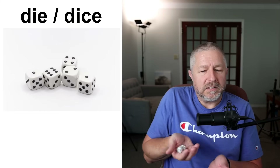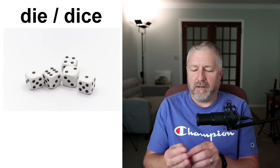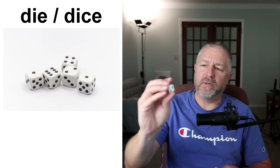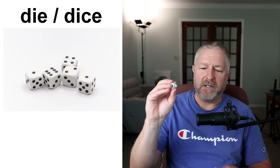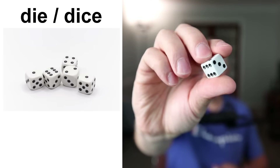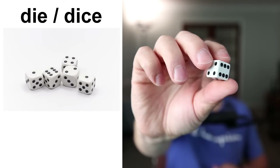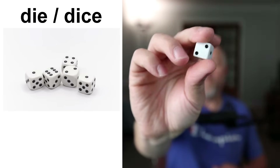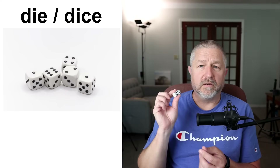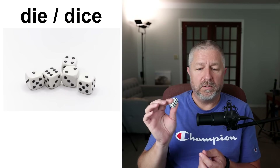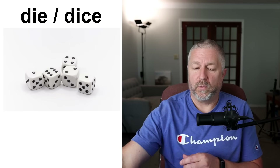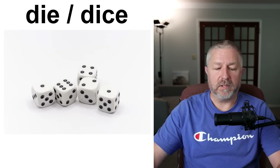They make a nice little sound, and you can see that they have numbers represented by dots — numbers from one to six. A lot of board games will come with dice. A lot of board games require dice so that you can play them.